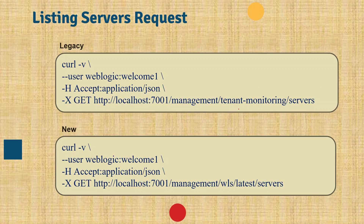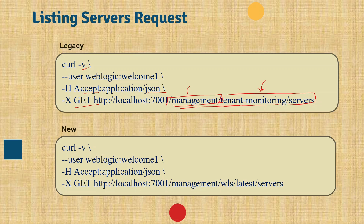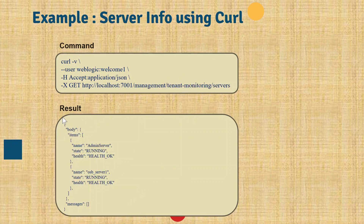You can also invoke RESTful management services using curl. The commands shown here return server states. In the command, the -v option is for verbose. We have the username and password in the header, an Accept parameter specifying whether to get the response in JSON or XML format, the method specified as GET, and the endpoint — where this is the relative path, this is the fixed path, and this is the admin server host and port. There are two commands: the first is a legacy command that still works due to backward compatibility, and the second is the one used in the latest version of WebLogic. The response for the curl command shows a JSON response, similar to what we have seen in the browser or Postman.